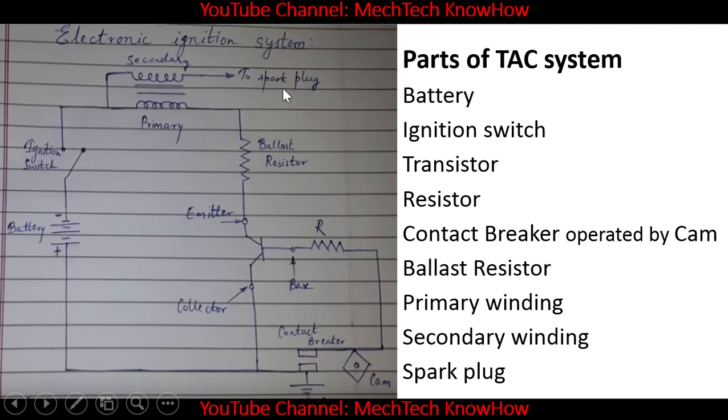Okay, let us repeat this again. For electronic ignition system we are discussing here parts of TAC system. So the parts are as follows: battery, ignition switch, transistor, resistor, contact breaker which is operated by the cam, ballast resistor, primary winding, secondary winding, and spark plug.